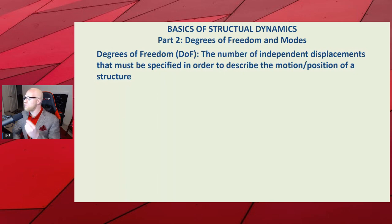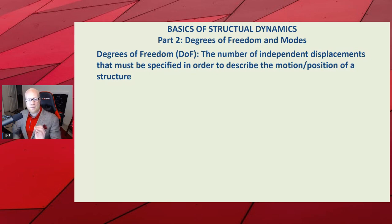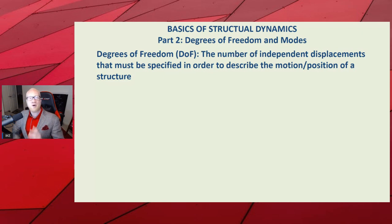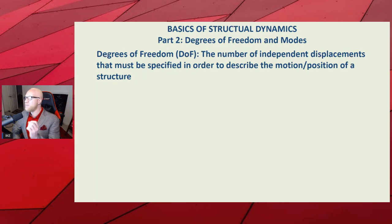Degrees of freedom are the number of independent displacements that must be specified in order to describe the motion and position of a structure. In reality there are infinite numbers of degrees of freedom — every little point in the structure may be going up and down, left and right, rotating in all different directions. But we idealize things to sufficiently describe the motion and position of a structure.